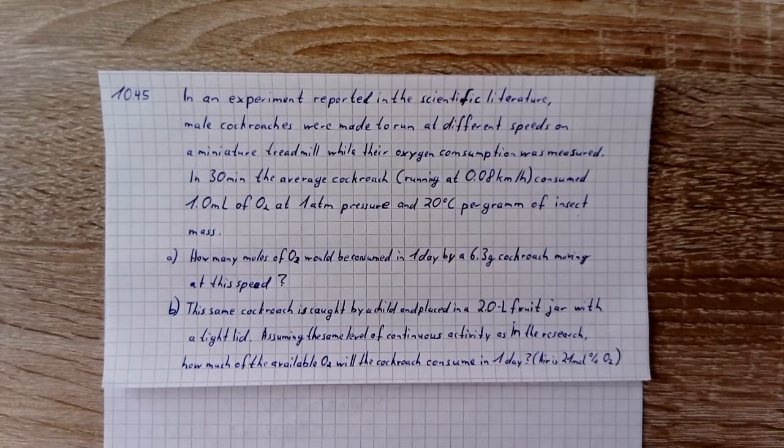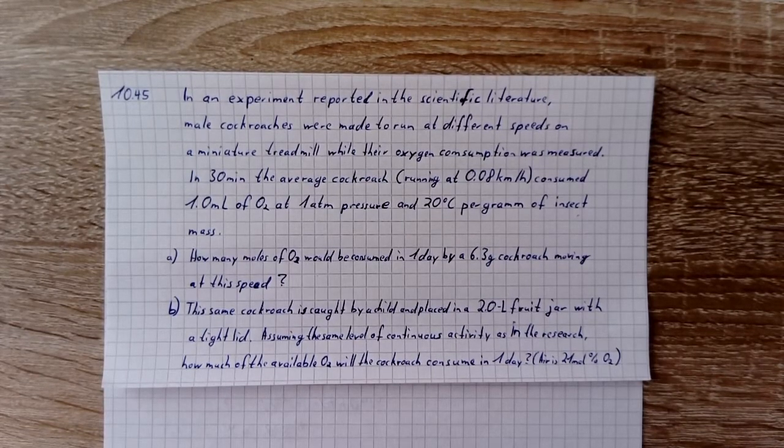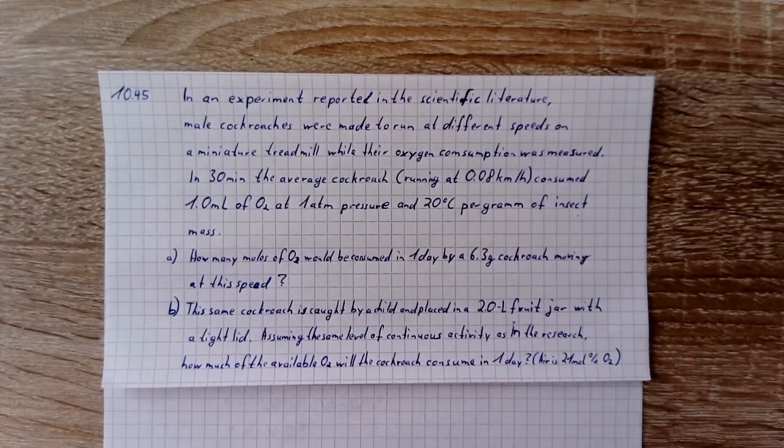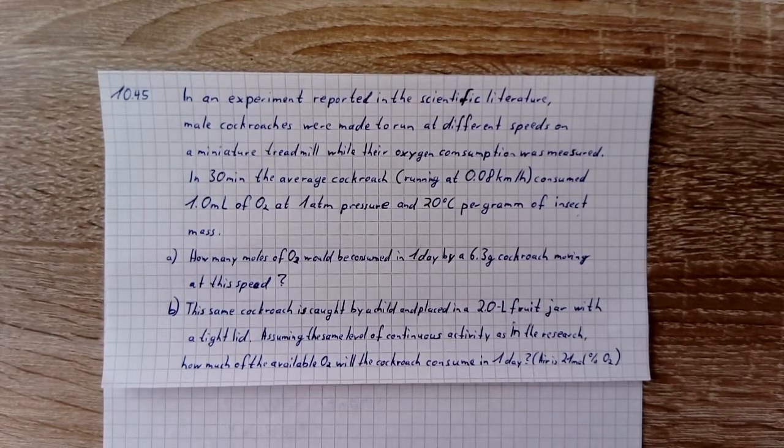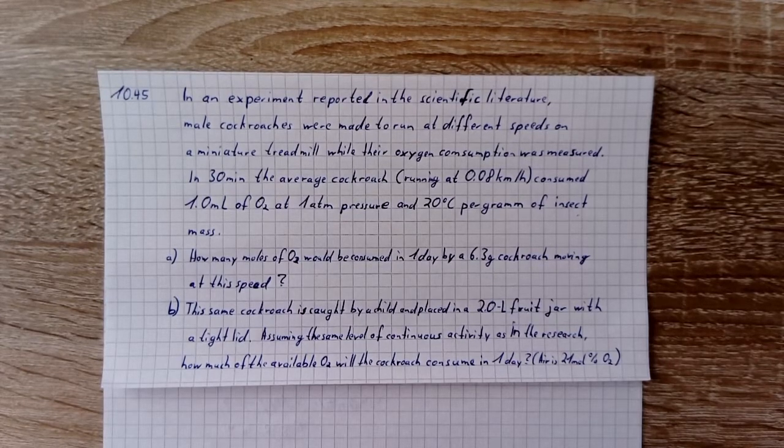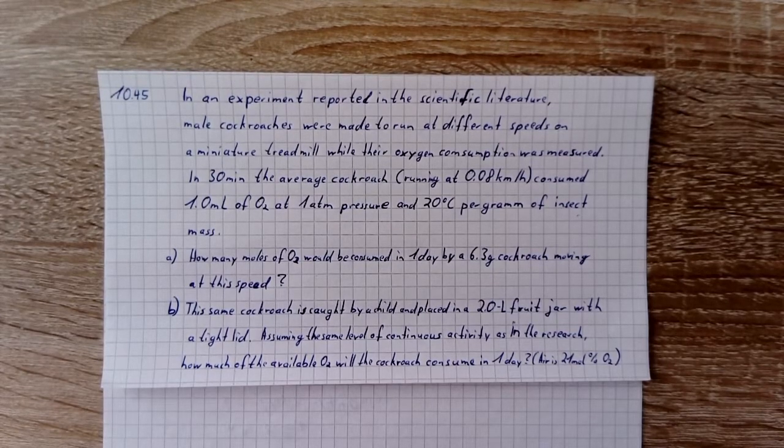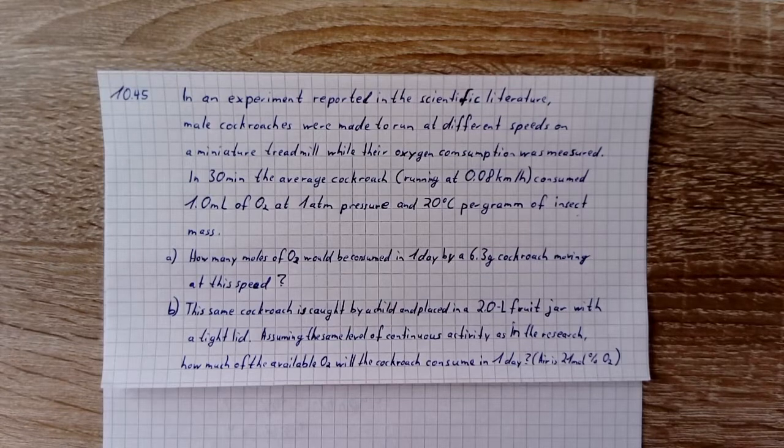In 30 minutes the average cockroach running at 0.08 km per hour consumed 1.0 ml of oxygen at 1 atm pressure and 20 degrees Celsius per gram of insect mass.